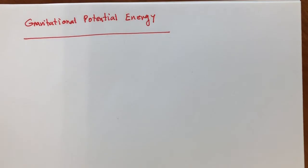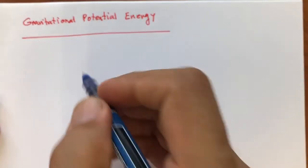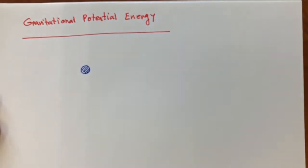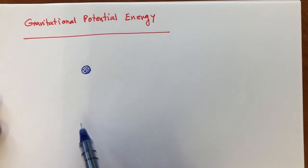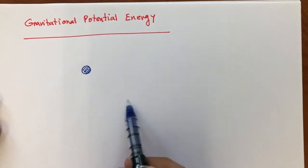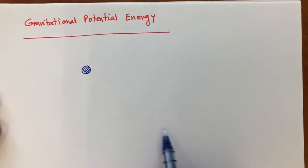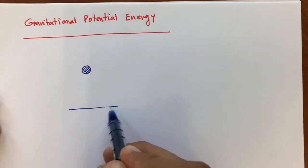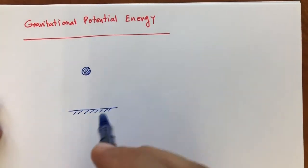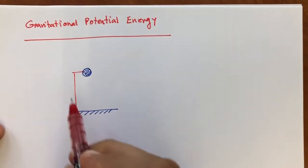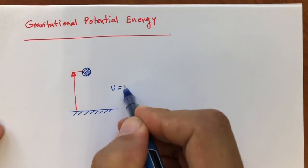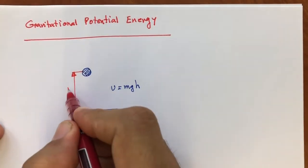I want to review gravitational potential energy and add one thing to what we have learned so far. Whenever we have a mass close to the earth, the potential energy is going to be MGH, where H is the height from a reference line. You are allowed to put your reference line anywhere you want, as long as the distance of your mass from the surface of the earth is negligible compared to the radius of the earth.